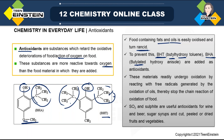BHT and BHA readily undergo oxidation by reacting with free radicals generated by the oxidation of oils. Once these free radicals react with BHT or BHA, the chain reaction is stopped. Once the chain reaction involving these odd-electron molecules is stopped, oxidation of food is no longer possible. Other types of antioxidants — sulfur dioxide or sulfite salts — are also useful antioxidants for wine, beer, sugar syrup, cut/peeled or dried fruits and vegetables.